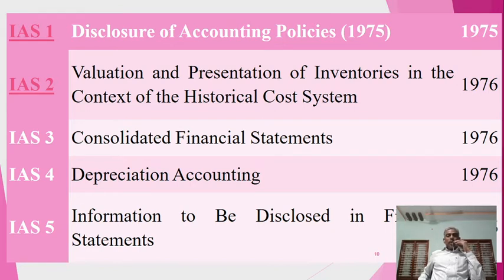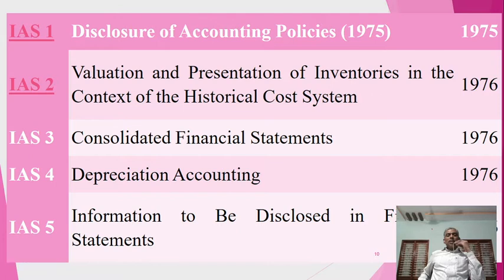IAS 3 is on consolidated financial statements, established in 1976. IAS 4 is related to depreciation accounting, developed in 1976. IAS 5 covers information to be disclosed in financial statements — such as permanent loss and similar items — and was developed in 1976.